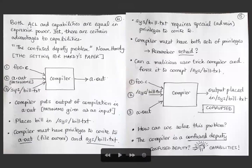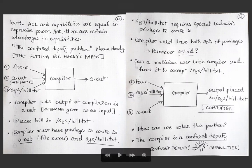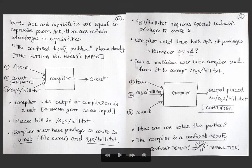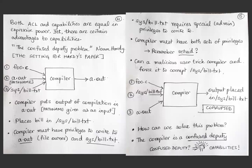ACLs and capabilities are equal in expressive power — both represent the same access control matrix — but there are software engineering advantages to capabilities. To illustrate this, I'll refer to a classic one-page paper called 'The Confused Deputy Problem' by Norm Hardy, which is assigned reading. It explains why capabilities may have been invented and why people think about capabilities differently from ACLs.